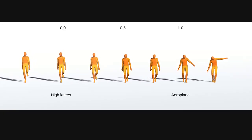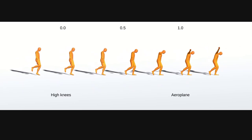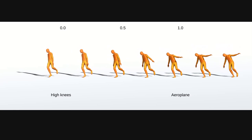Here are examples of guided interpolation between the high knees and aeroplane style, whilst walking in a straight line, a circle, and an S-curve.